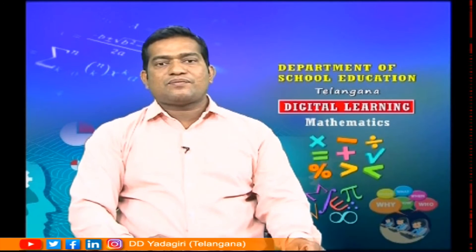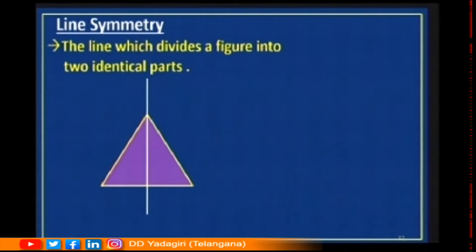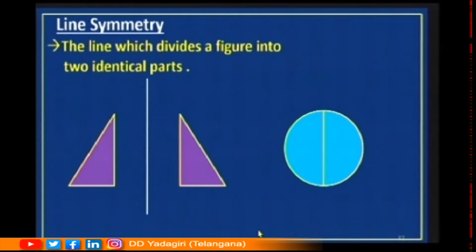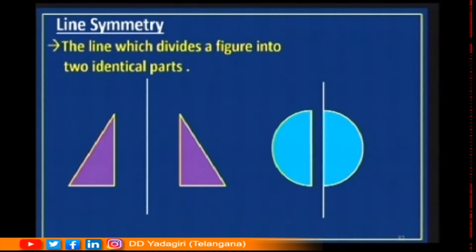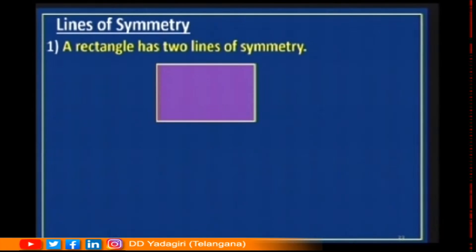Now let us understand types of symmetry. We have three types: line symmetry, rotational symmetry, and point symmetry. Line symmetry is the line which divides a figure into two identical parts. If you take any figure and draw a line that divides it into two equal parts, that line is called the line of symmetry. For example, a triangle divided by a line, or a circle divided by a diameter — both show line symmetry.